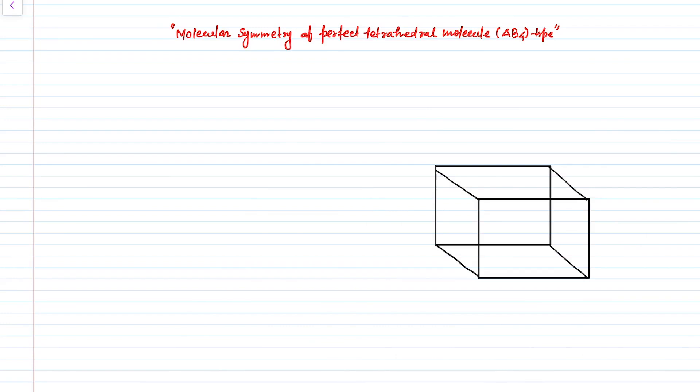Hi everyone, welcome to my channel BigBankMSU.com. Today I am going to explain the molecular symmetry of a perfect tetrahedral molecule of AB4 type. Before explaining all the symmetry elements, we must know how we represent a tetrahedral molecule in molecular symmetry, what symmetry elements are present in this molecule, and what are the distinct symmetry operations.